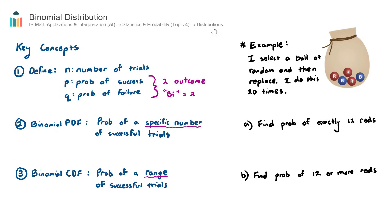Now, in the AISL course, we'll encounter three types of distributions. We have Probability Distribution, Binomial Distribution, and Normal Distribution. And for the HL course, in addition to those three, we'll also encounter Poisson's Distribution. But in this video, we are looking at Binomial Distribution.